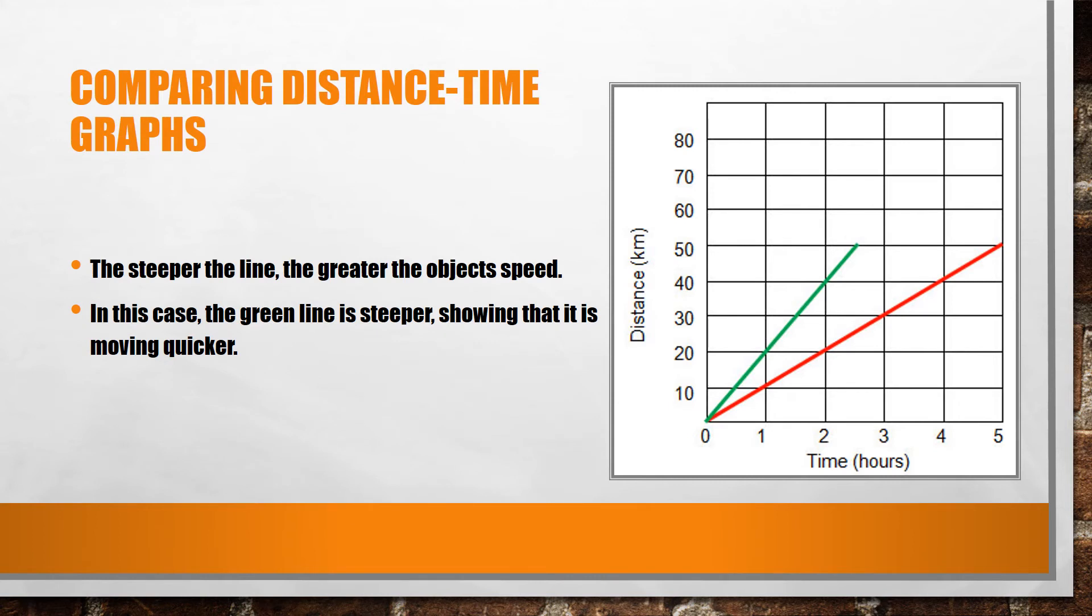Comparing distance-time graphs. On the graph, we are shown two different lines. Both tell me that the objects are traveling away from their starting point at constant speeds. But which one is going quicker? Well, the green object is. We know this because the line is steeper than the red line. You could also figure this out by looking at some of the data given on the graph. If we look at the two-hour mark, the green object has managed to travel 40 kilometers, while the red object has only gone about 20.